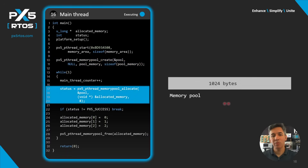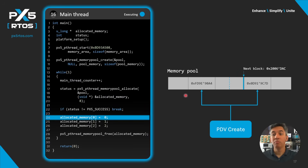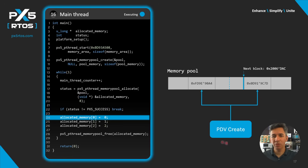The memory pool is created here with 1024 bytes free. Next, it tries to allocate 8 bytes from the memory pool. Memory was available and taken from the pool. Since PDV is enabled, the pdv_create function generated the verification code for both the new block and the next block.